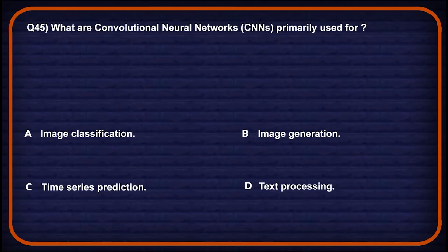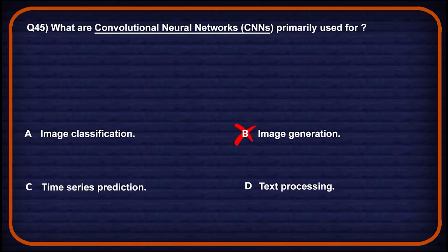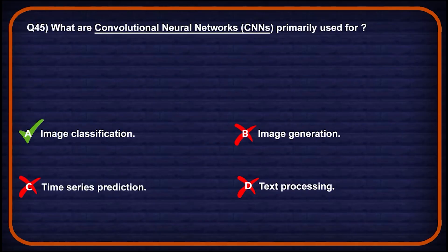Let's move on to question number 45: what are convolutional neural networks primarily used for? Option A: image classification — CNNs extract visual features to label images accurately, so this might be a potential answer. Option B: image generation — handled by models like GANs, not CNNs, so wrong. Option C: time series prediction — sequential models like RNNs or LSTMs are better suited for time series, so wrong. Option D: text processing — NLP tasks use transformers or RNNs, not CNNs as a primary architecture, so wrong. Option A, image classification, is the correct one.